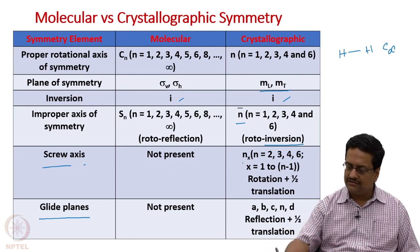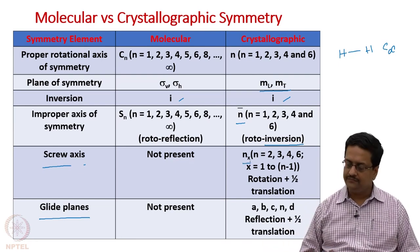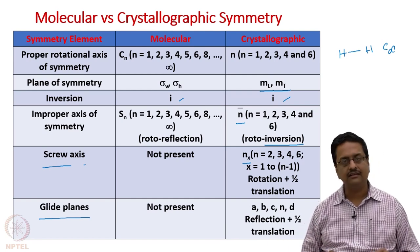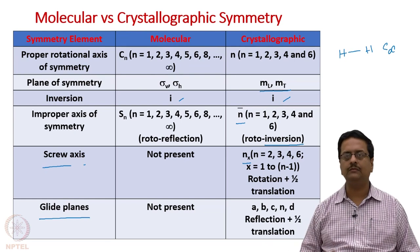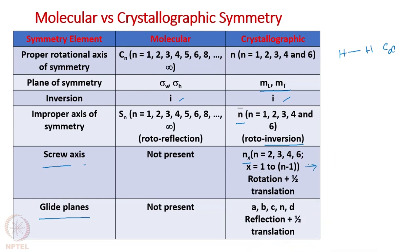For n equal to 2, there is only 2₁. For n equal to 3, it can be 3₁ and 3₂. For n equal to 4, it can be 4₁, 4₂, and 4₃. For 6, it can be 6₁, 6₂, up to 6₅. The glide planes are named as a, b, c, n, and d glides. These glide planes are actually a reflection followed by half translation along the direction of a, b, c, or n (diagonal).